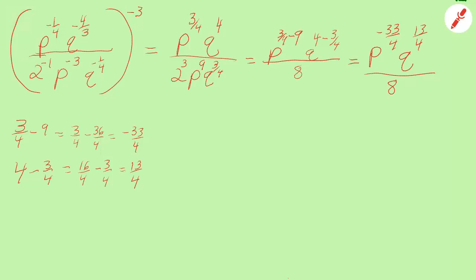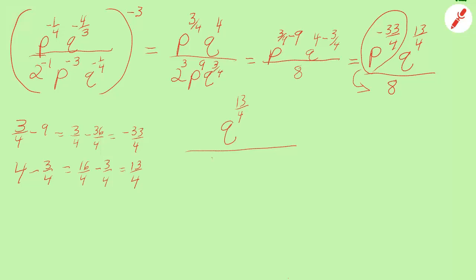Notice that p is raised to a negative power. We're going to take the p term and move it to the denominator where its power will become positive. So my final answer is q to the 13/4 power in the numerator, over 8 times p to the positive 33/4 power. Meditate on that for a while and I'll talk to you later.